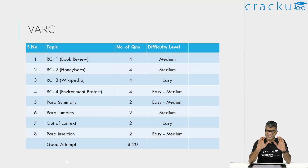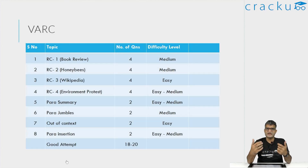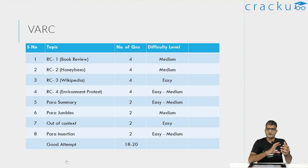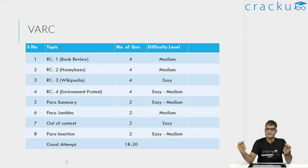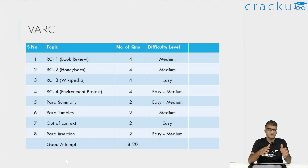To summarize the RCs: all four were not difficult to read, there was no dry RC, and all four topics were interesting. Three out of four topics were based on current affairs, so people wouldn't feel bored. The Wikipedia RC did not have any inference-based questions, making it easy. The others were somewhat medium-level difficulty.